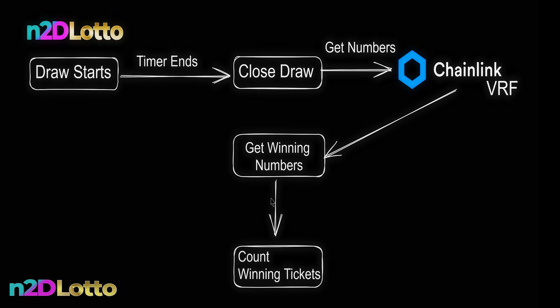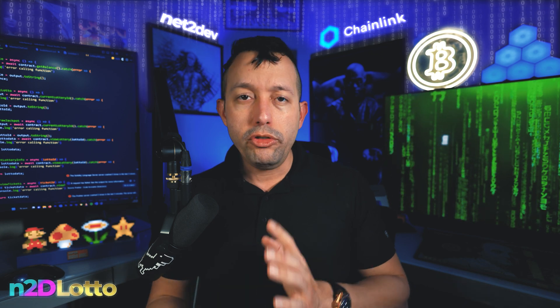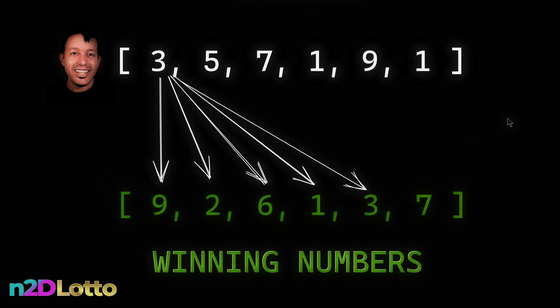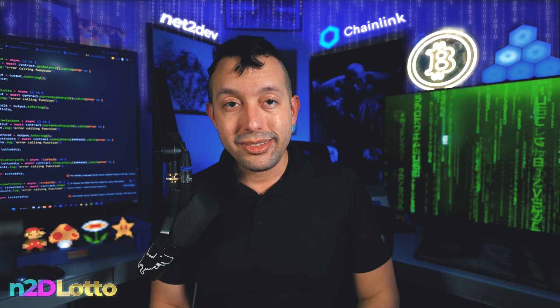Number two: every single ticket bought in the draw — I have to take every number and compare it to the winning numbers. That is a challenge. You might say, well, you can do for loops. But what's the problem with an extensive for loop in a smart contract? The problem of looping and validating values one by one is that every single transaction costs a gas fee. That route is not efficient — it's very expensive, it takes a lot of time, and it might run out of gas before completing. If we have 200 tickets, are we going to check every single one of them one by one? No.